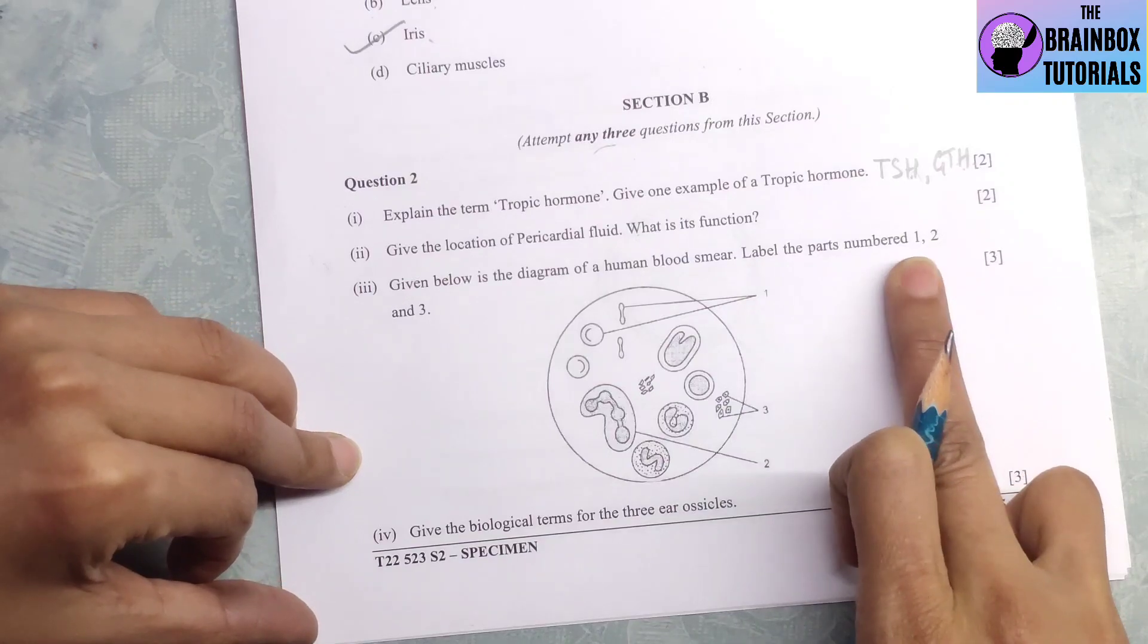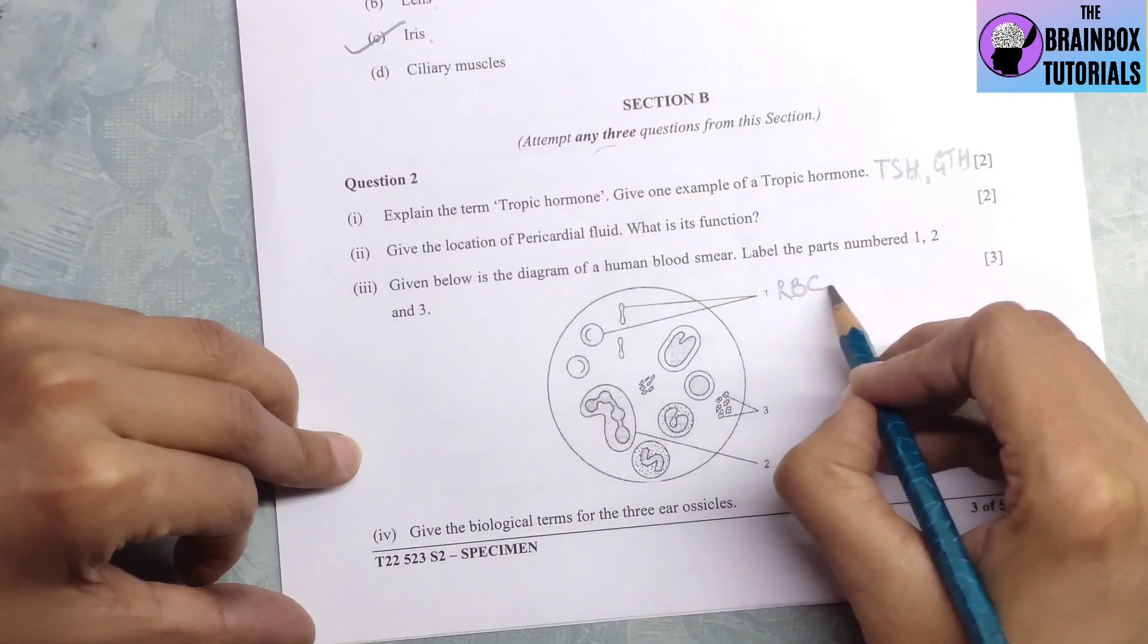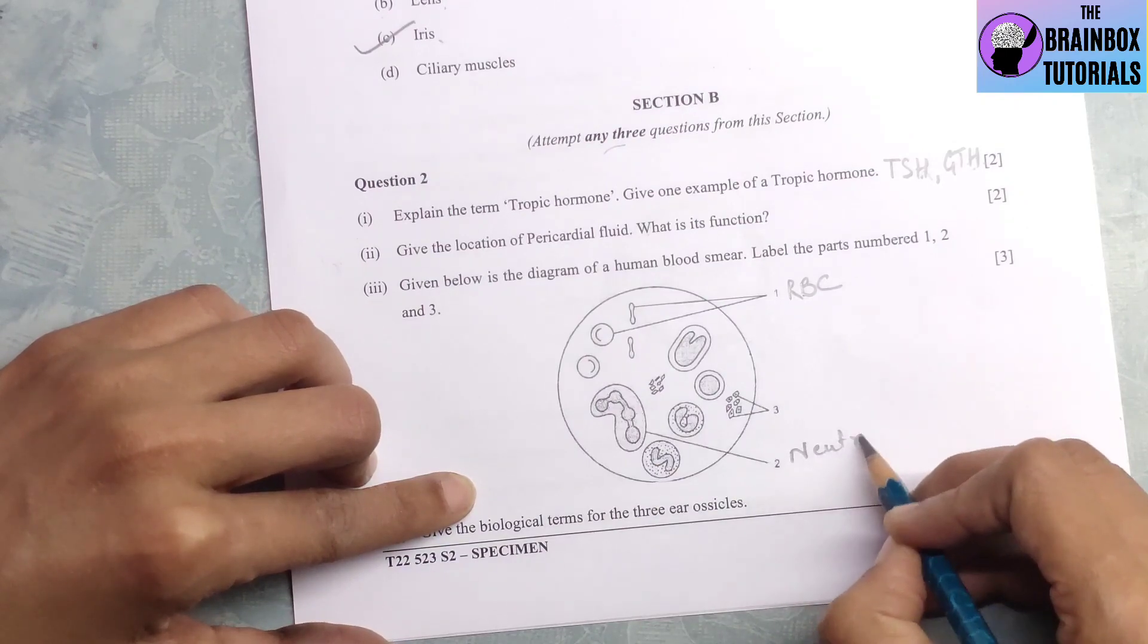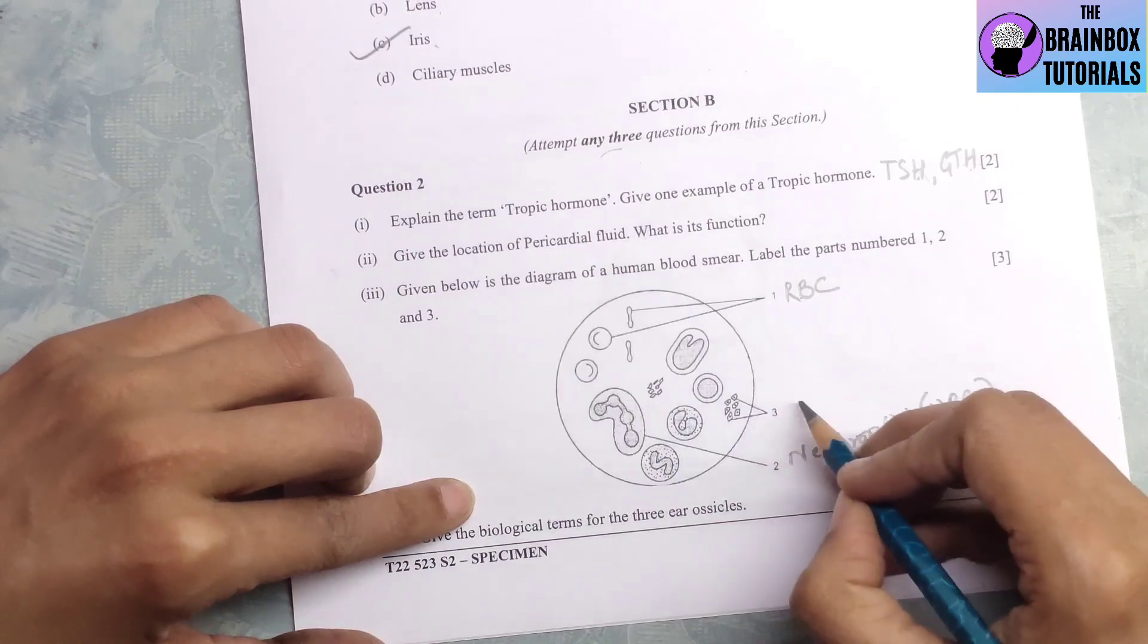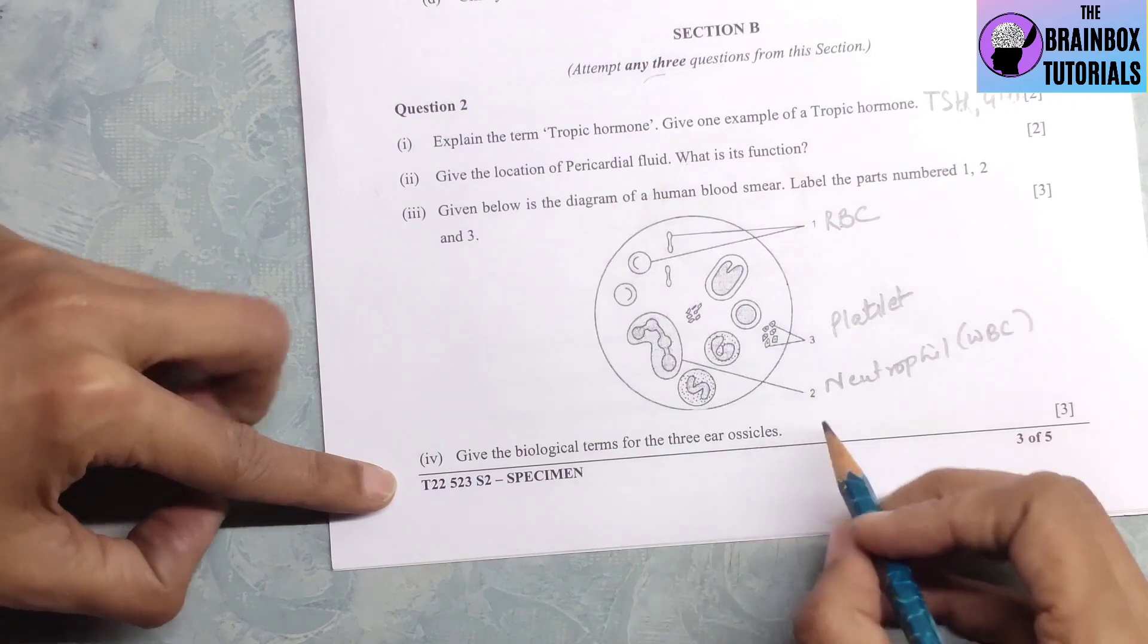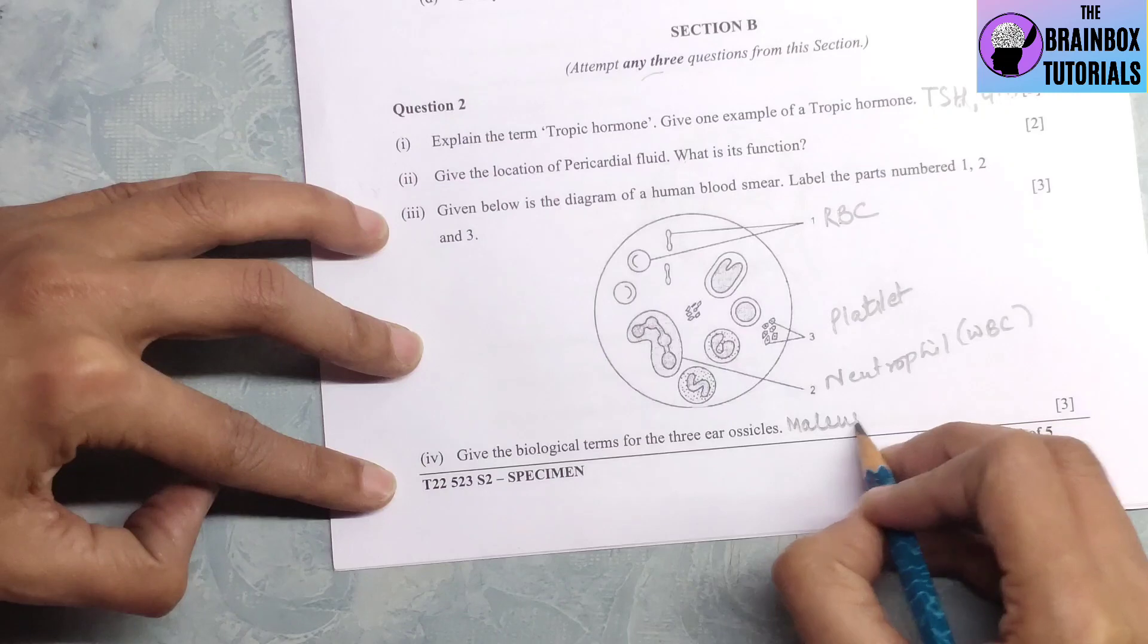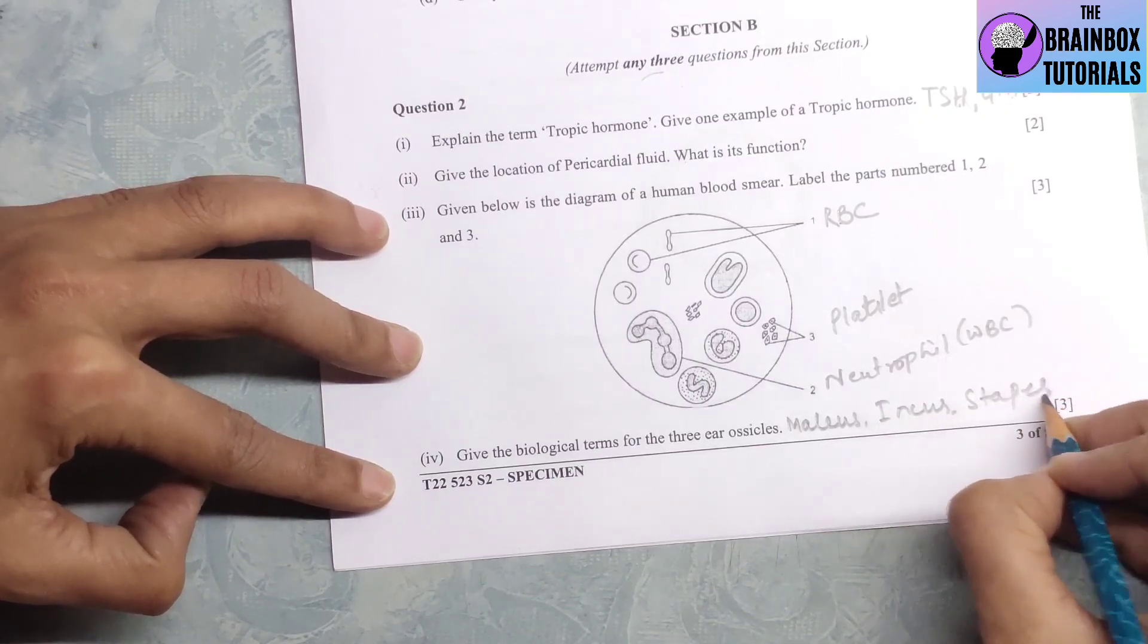Third one, given below is the diagram of a human blood smear. Label the parts numbered 1, 2 and 3. This is number 1, red blood corpuscles, RBC. Number 2 is neutrophil, and you will also write that it is part of WBC. Number 3 is platelet. Subpart 4, give the biological terms for the 3 ear ossicles. The 3 ear ossicles are malleus, incus and stapes.